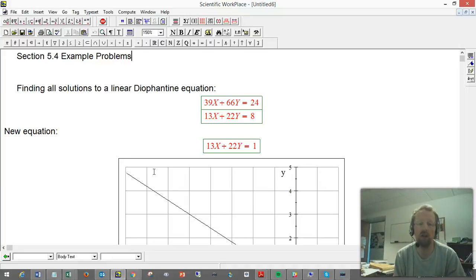So let's look at the full process for finding all solutions to a linear Diophantine equation. We're going to start with 39x plus 66y equals 24.